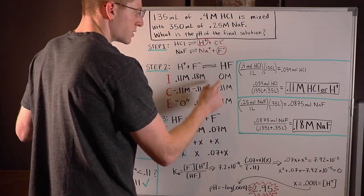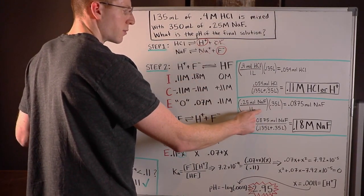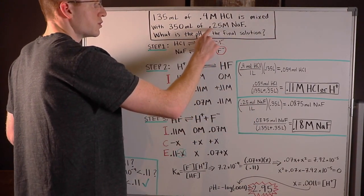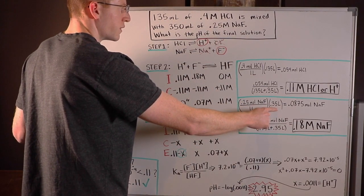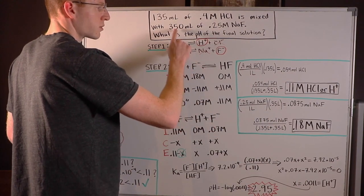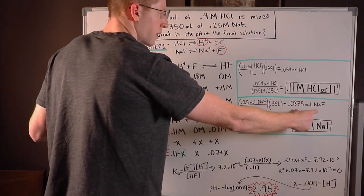Then I did the same exact thing to obtain my F minus. So I started out with NaF, 0.25 moles of NaF per one liter of solution. But we only had 350 milliliters of this solution or 0.35 liters. So I found moles of NaF.